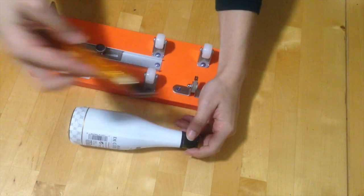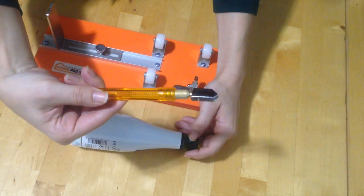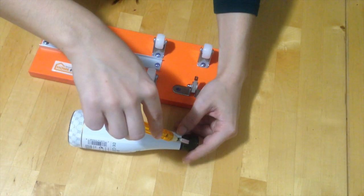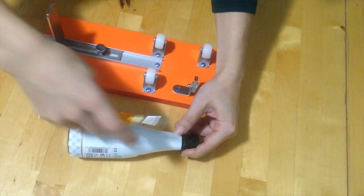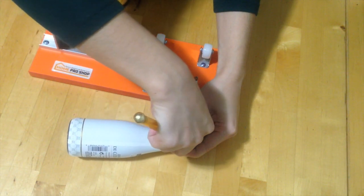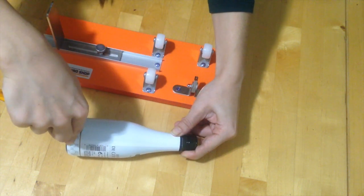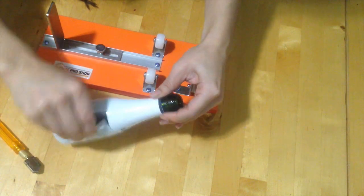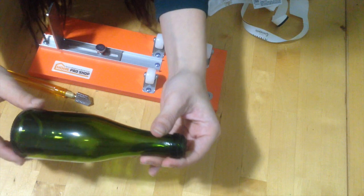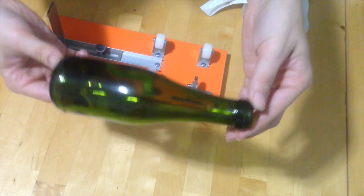And we're going to use this handy dandy glass cutter just very lightly across the top of this to score the glass. Now we have just a little glass bottle.